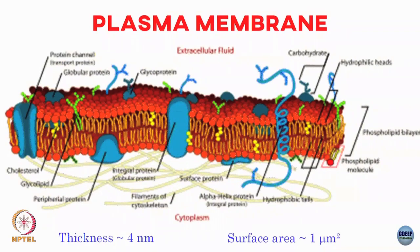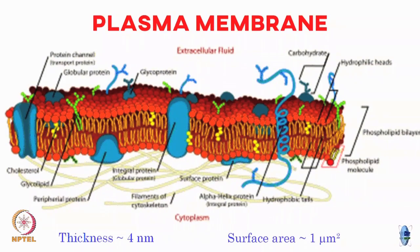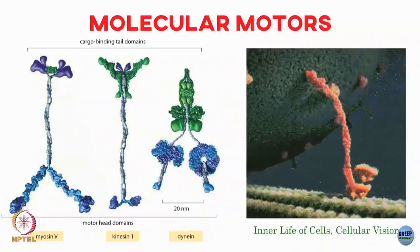The plasma membrane: phospholipids form a bilayer such that the hydrophilic parts are exposed to water and the hydrophobic parts are protected inside. Various transmembrane proteins are embedded in this plasma membrane, as well as ion channels that allow things to move in and out. The membrane is roughly 4 nanometers thick with surface area on the order of microns.